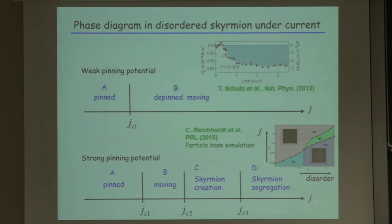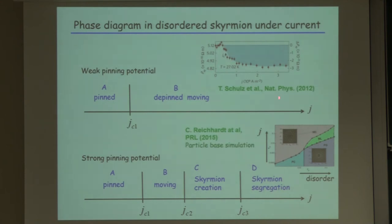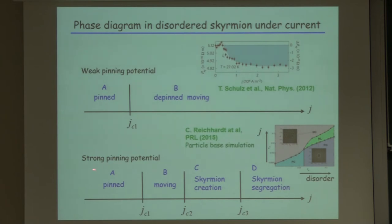We are interested in the disorder effect. This is an experimental observation of the threshold current density for spin transfer torque, along with a reduction of the topological Hall effect due to the emergent electric field induced by skyrmion motion, from the German group. For weak pinning potential, the phase diagram as a function of current density is simple: one critical current density below which the skyrmion crystal is pinned, and above which the whole crystal depins and moves.